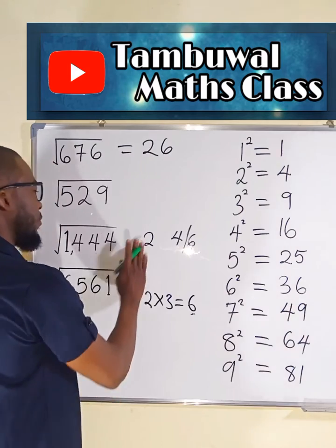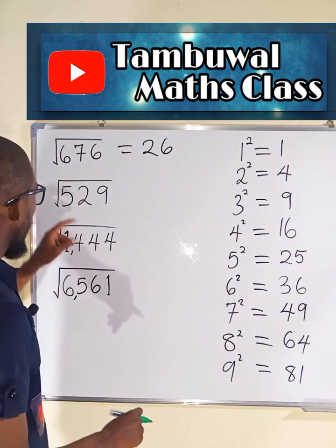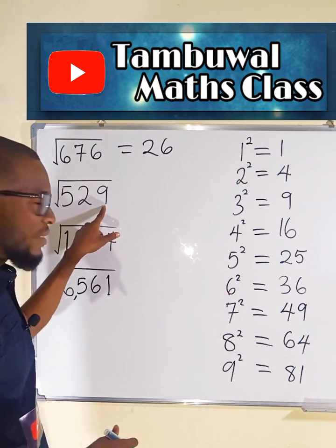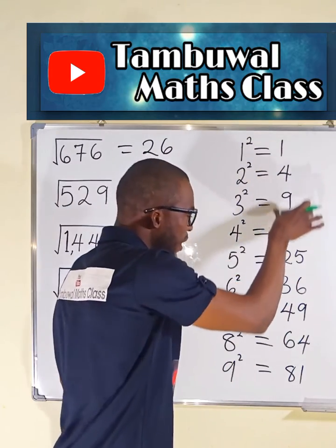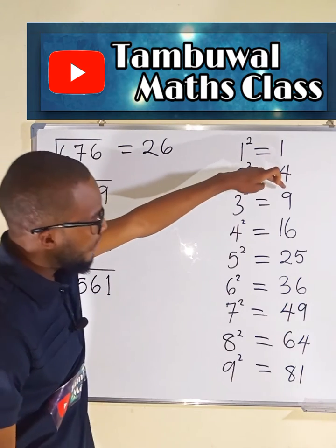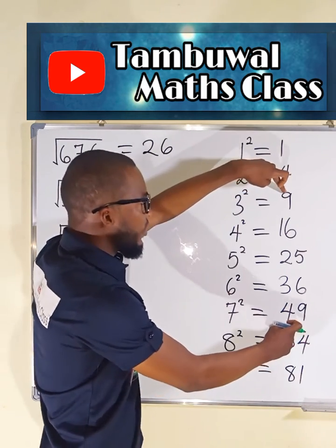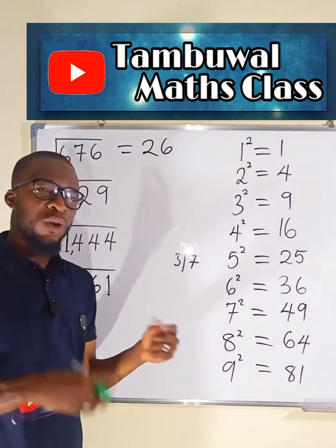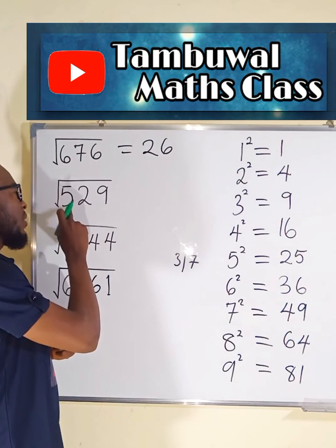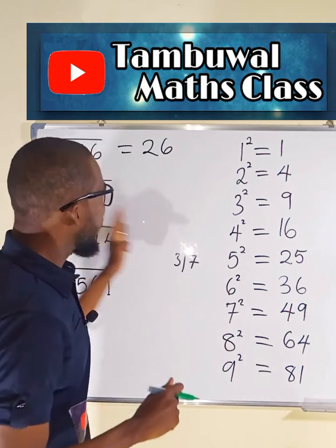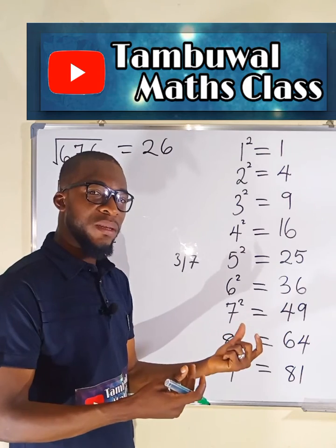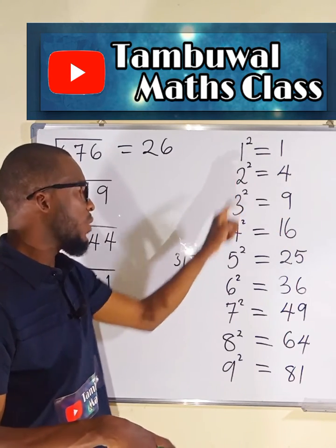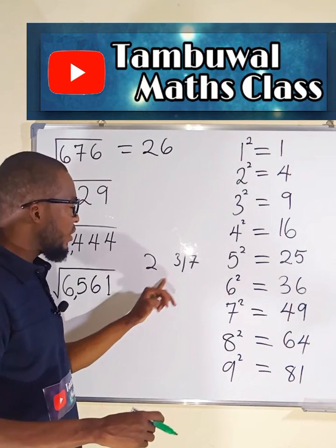Let us move on to the next one. We want to find the square root of 529. We find the last digit by considering the last digit here, which is 9. We locate a perfect square number that ends with 9 — we have two — and their corresponding square roots are 3 and 7 respectively. So our last digit will either be 3 or 7. We find the first digit by ignoring the last two digits and considering only the first digit, which is 5. We locate 5 under the perfect squares; 9 is greater, therefore we consider 4, and the square root of 4 is 2. So our first digit is 2, and our answer will either be 23 or 27.